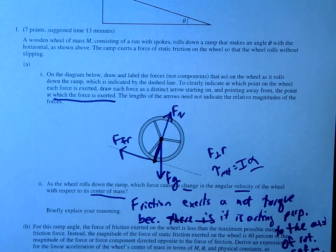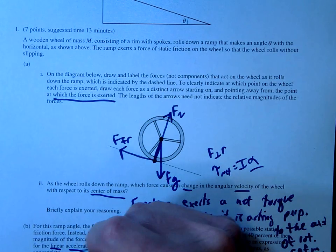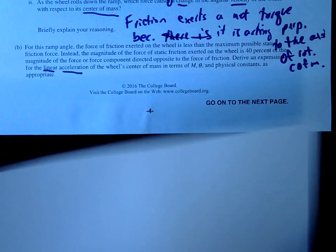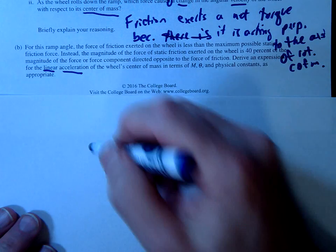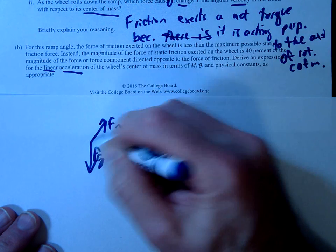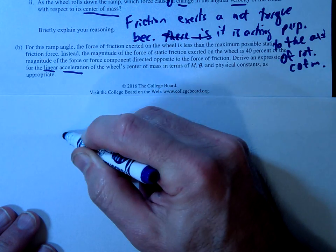Alright, next question is we're going to go ahead and figure out the linear acceleration. So we're going to try to figure out the linear acceleration as this is traveling down the ramp. So we have our free body, right? We have our F gravity. I'm just going to draw it here. F gravity, our Fn and our friction going this way.